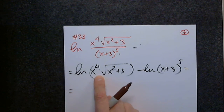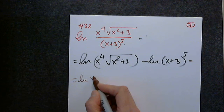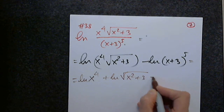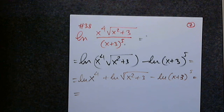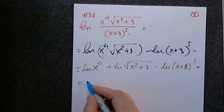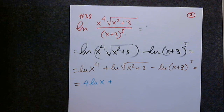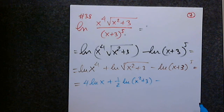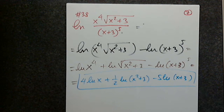Can anyone dictate the product here? Natural log of x to the fourth, plus natural log of the square root of x squared plus three, minus natural log of x plus three to the fifth. Now can anyone apply the power rule for all three? Four natural log of x, plus one-half natural log of x squared plus three, minus five natural log of x plus three. And this is it — completely expanded.